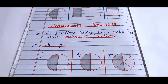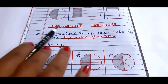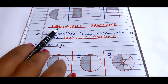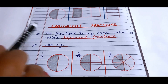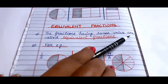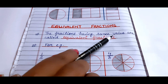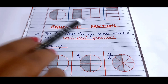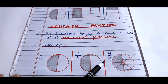The next topic is equivalent fractions. Equivalent has one hidden word — equal. So what are equivalent fractions? The fractions having the same value are called equivalent fractions. For example, 1 by 2, 2 by 4, and 4 by 8.